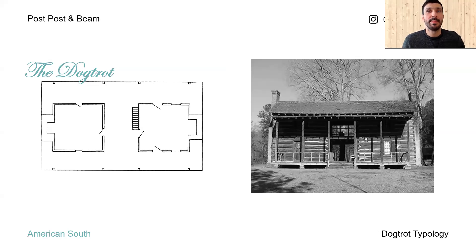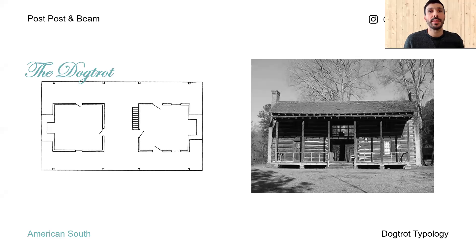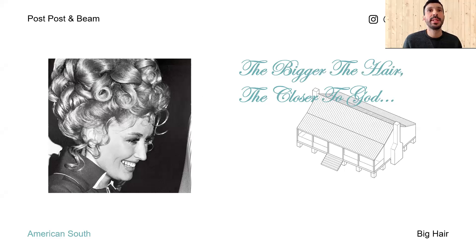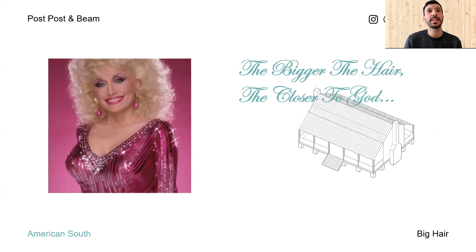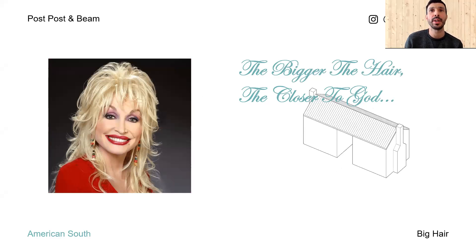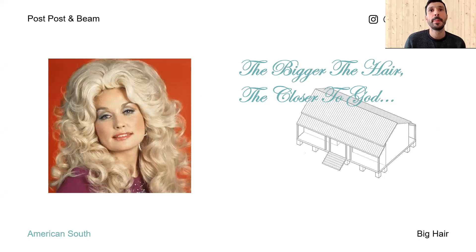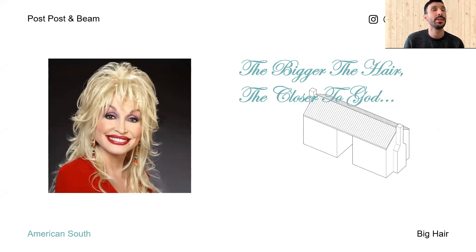The dogtrot, also known as a breezeway house, dog run, or possum trot, is a style of house common throughout the southeastern United States during the late 19th and early 20th centuries. The main architectural feature was a large breezeway through the center of the house to cool its occupants in the hot southern climate. Another quintessentially southern condition is big hair. Pictured here are just a few of Dolly Parton's big hairstyles juxtaposed to some of their analogs in the dogtrot type. I'm proposing to transpose the famous southern dictum — the bigger the hair, the closer to God — into the realm of architecture.